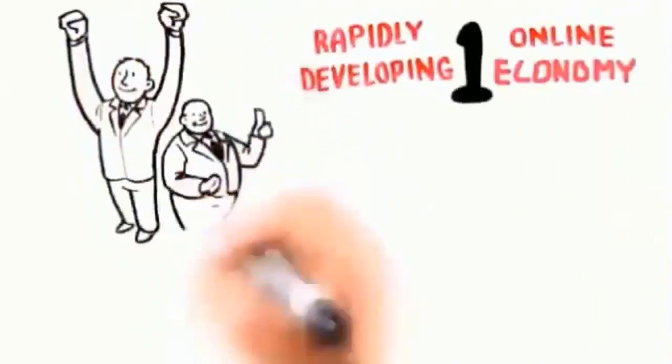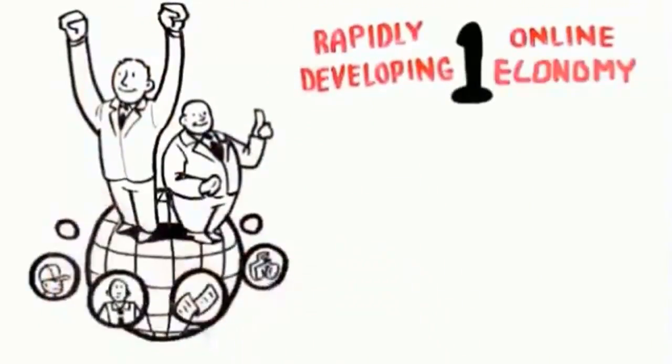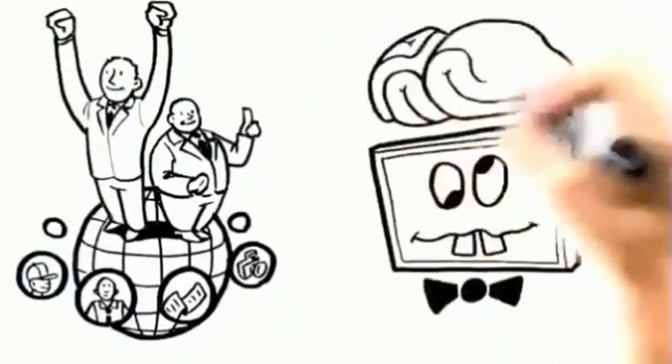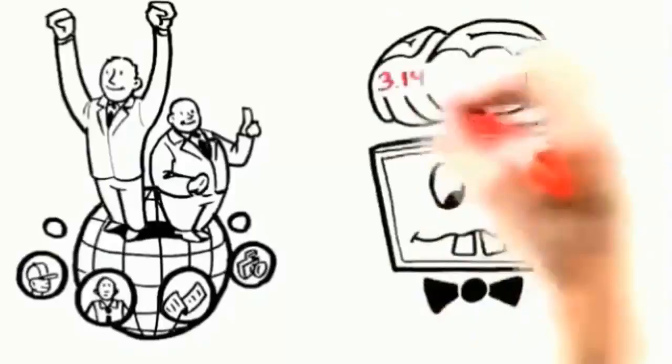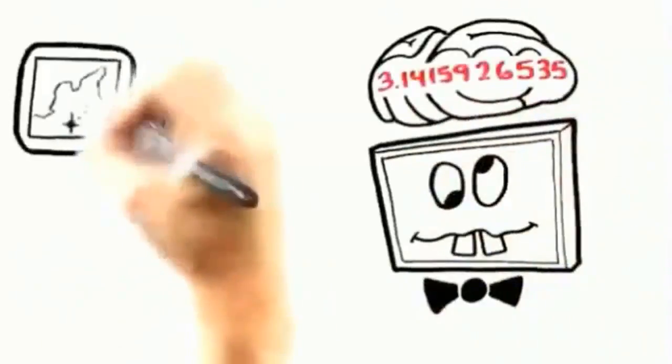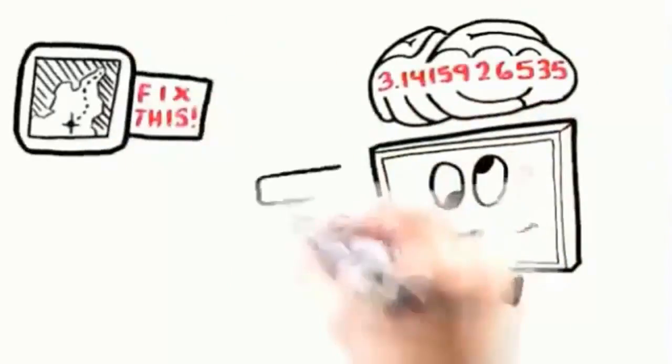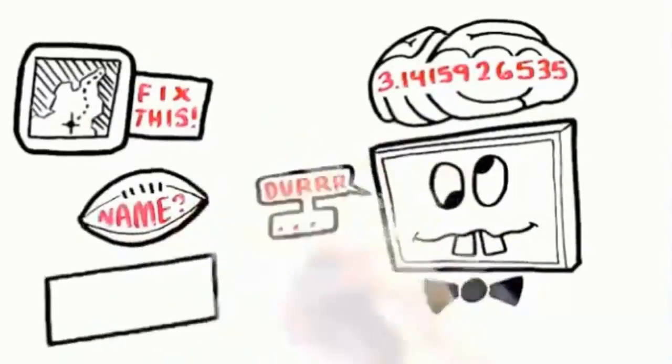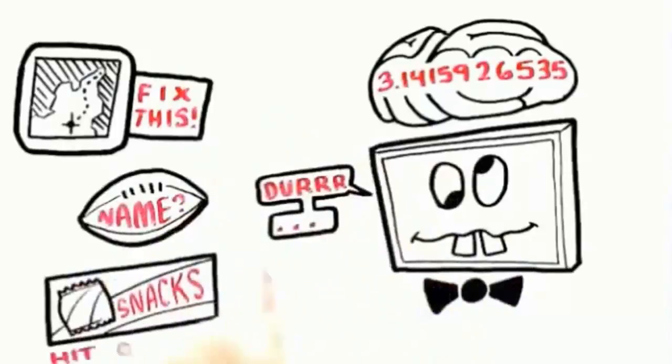I mentioned that there were two reasons for this rapidly developing online economy. The first being that it offers project managers and self-employed people much more flexibility and convenience. The second is the computers simply aren't that smart. Sure, they can calculate pi to a million decimal places, but ask them to correct errors in a map application, and they have no idea what you're talking about. Ask them to come up with a name for a fantasy football website. They go blank. If you need an opinion on whether a snack company's latest ad is a hit or miss, you better hire a human.